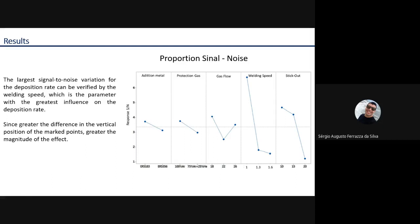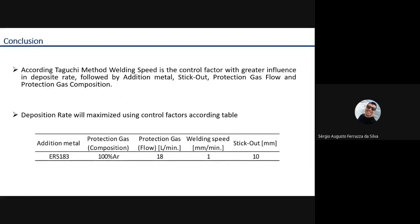The welding speed is the control factor with more influence in the deposition rate. Conclusion: According to Taguchi method, welding speed is the control factor with greater influence in the deposition rate, followed by additional metal, stick-out, protection gas flow, and protection gas composition.